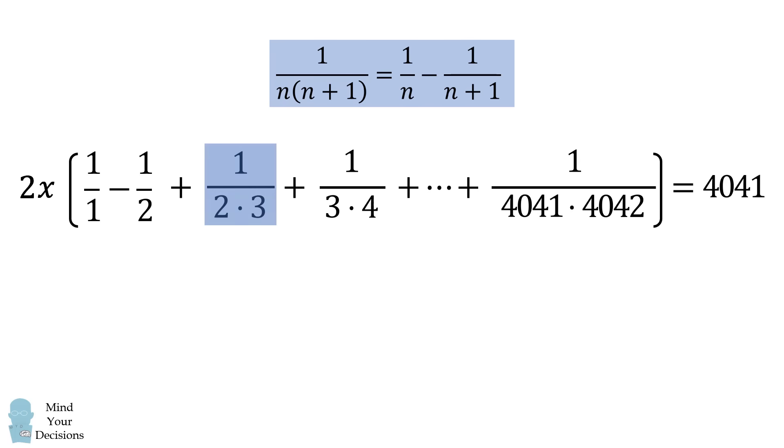The second fraction, we can use the same formula. We get 1 over 2 minus 1 over 3. We do the same thing for the third fraction. We get 1 over 3 minus 1 over 4, and we continue to the very last fraction.